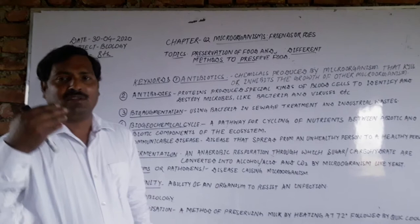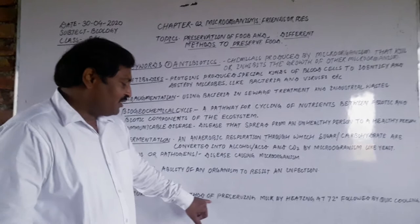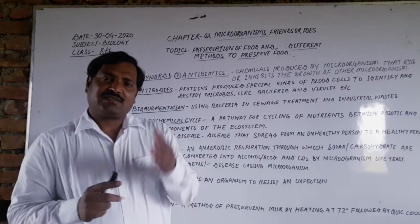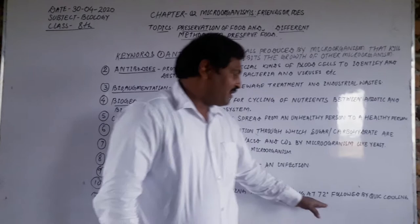Pasteurization is the method of preserving milk by heating it at 72 degrees Celsius, followed by quick cooling. The milk is first heated — below 100 degrees Celsius — and then quickly cooled. This process kills microorganisms in the milk.